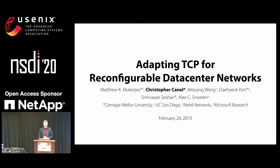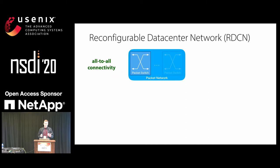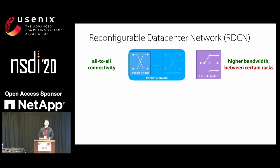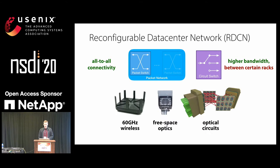What exactly do I mean by reconfigurable data center network? If you take a traditional multi-level CLO or fat-tree topology that provides all-to-all connectivity, and you combine it with a higher bandwidth circuit network that provides temporary reconfigurable bandwidth between certain racks, this temporary bandwidth can sometimes be 8 or 10x as high. The underlying technologies could be 60 gigahertz wireless, optical circuit switching, or free space optics, but the trends in this talk apply to all of these technologies.